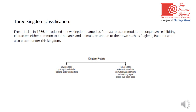Lower Protista were unicellular and prokaryotic — 'pro' means before and 'karyon' means nucleus — meaning they have no bounded nucleus. Examples include bacteria and cyanobacteria. Higher Protista were eukaryotic unicellular organisms such as algae and fungi, except blue-green algae. So lower Protista were prokaryotic unicellular organisms, while higher Protista were single-celled but with a complete nucleus.